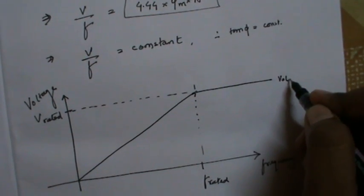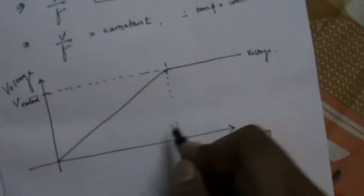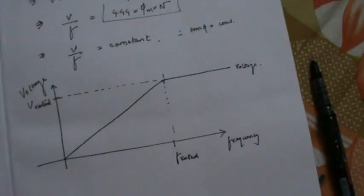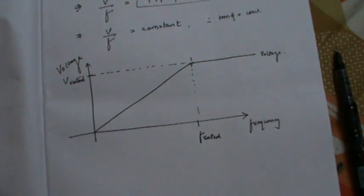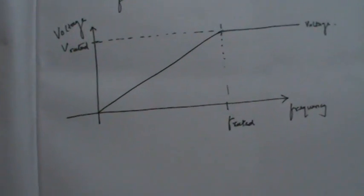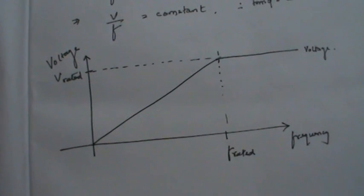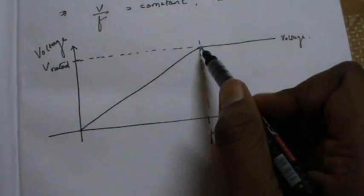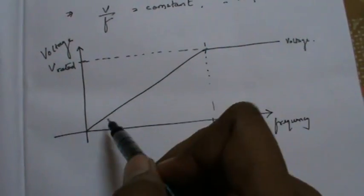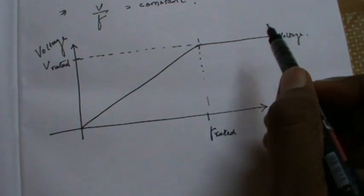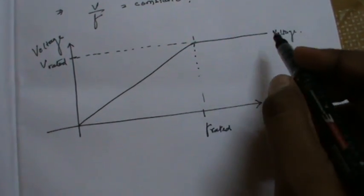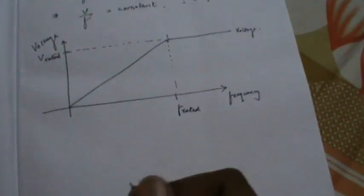This is the voltage curve plotted against variable frequency. As you can see, when the frequency is increased up to the rated value, the voltage increases proportionally. Beyond the rated frequency, however, the voltage remains constant. This is the characteristic curve of V by F control of a three-phase induction motor.